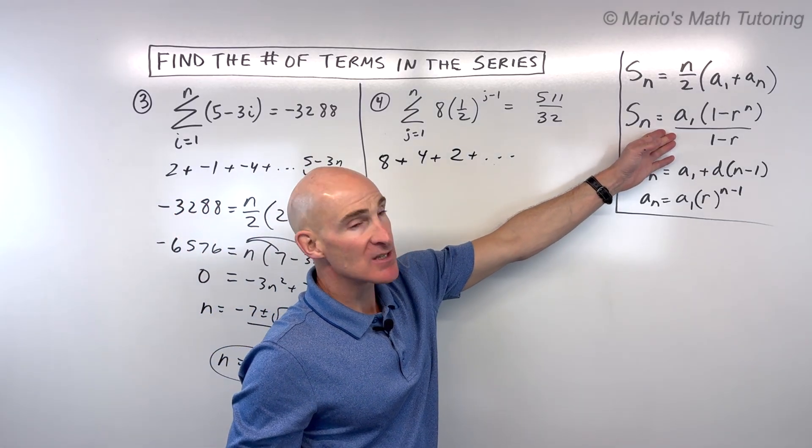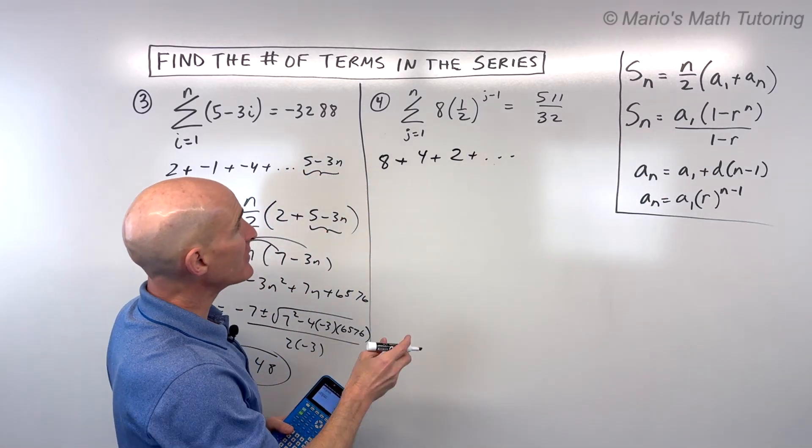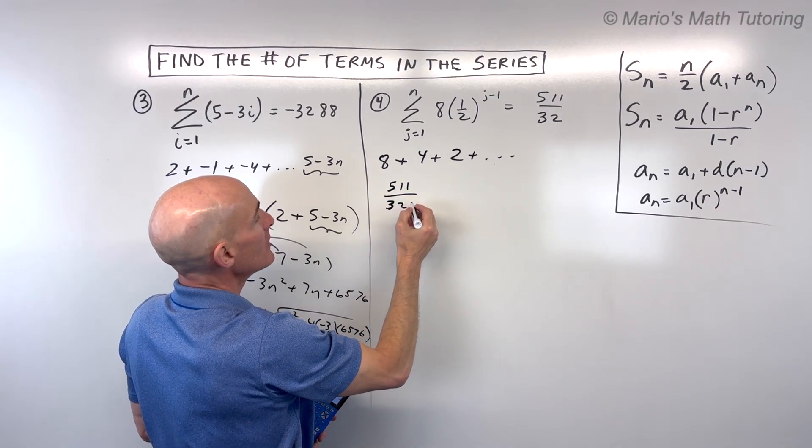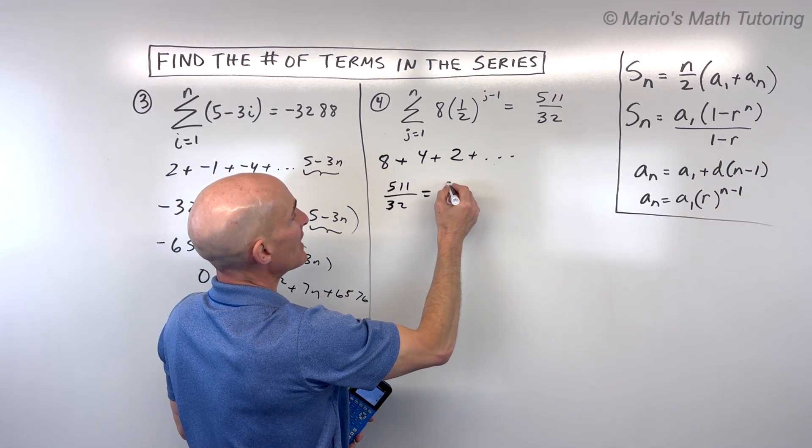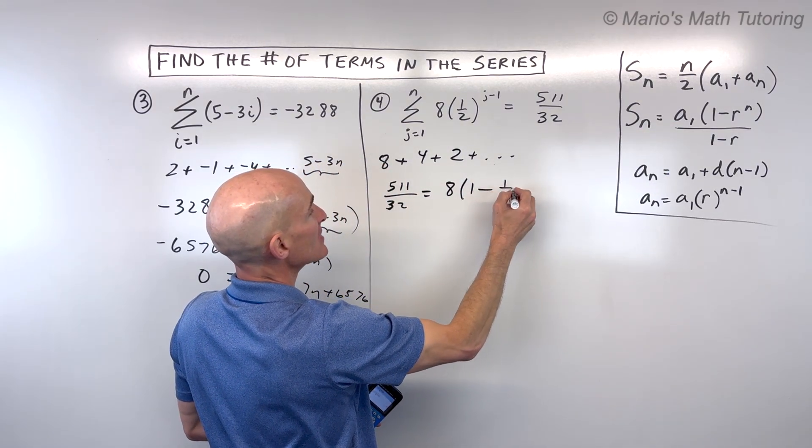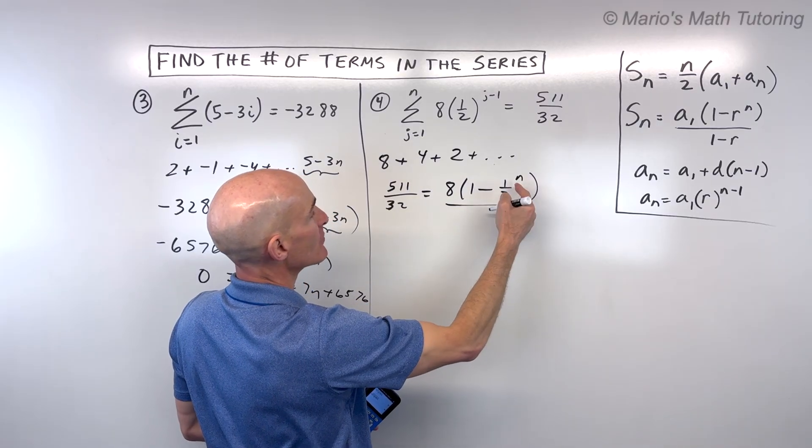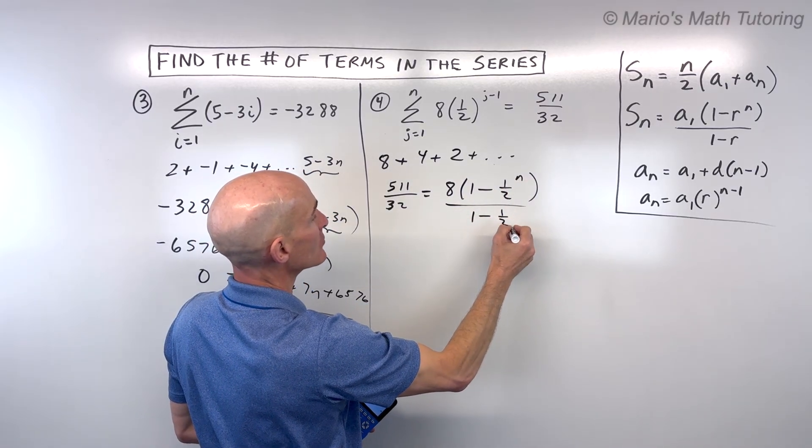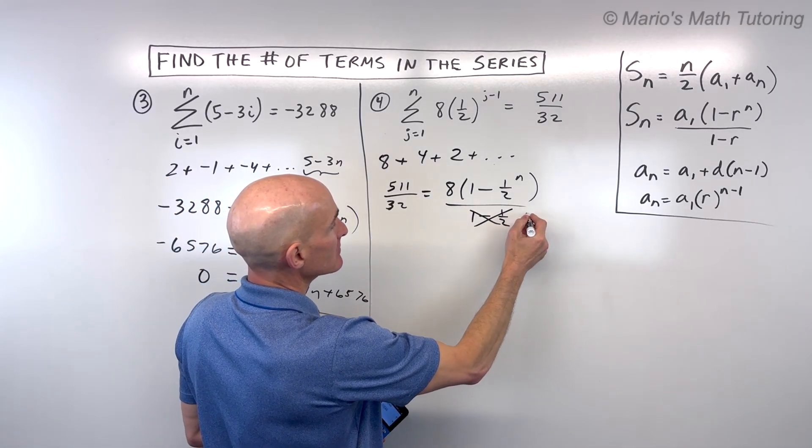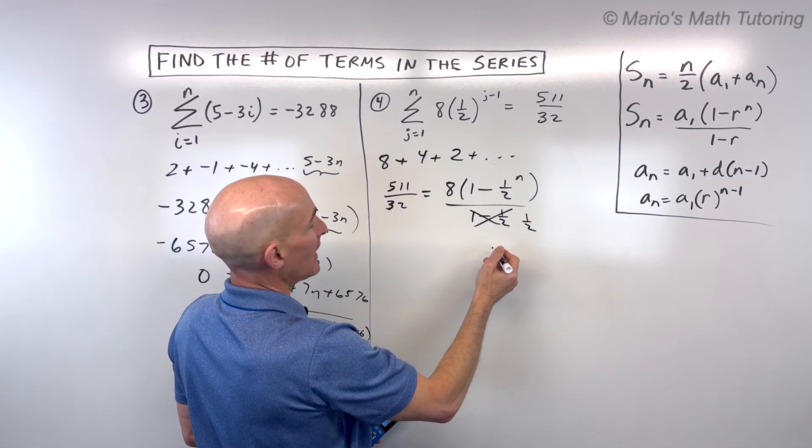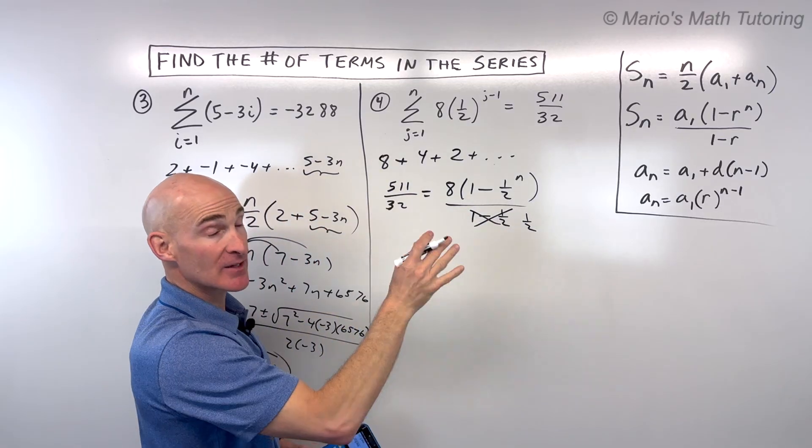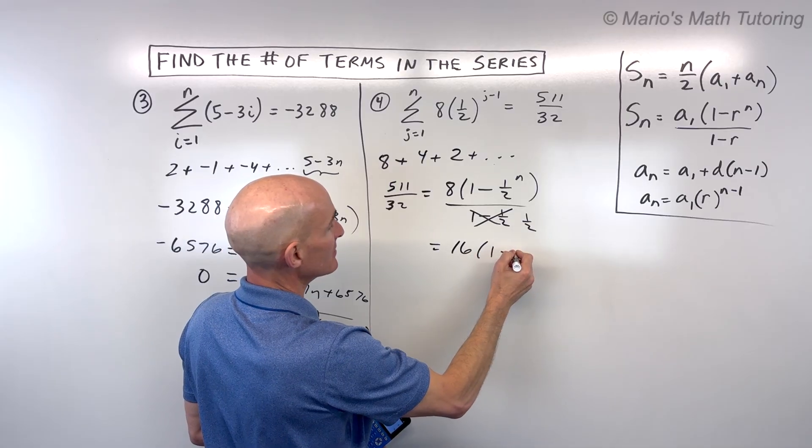So we're going to use our geometric sum formula to find the number of terms. We know the sum is 511 over 32. The first term we said was 8. I'm just using this formula right here. 1 minus the ratio, which we said is 1 half to the nth power. That's the number of terms, all over 1 minus the ratio. So now 1 minus 1 half is 1 half. And 8 divided by 1 half, well, when you divide by 1 half, it's like multiplying by the reciprocal. So that's actually 16.